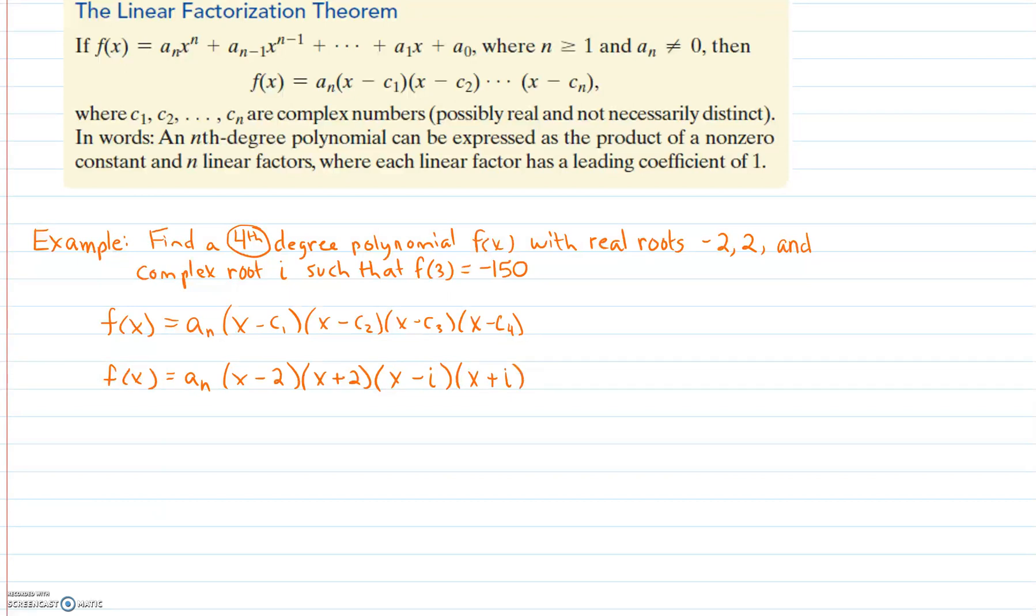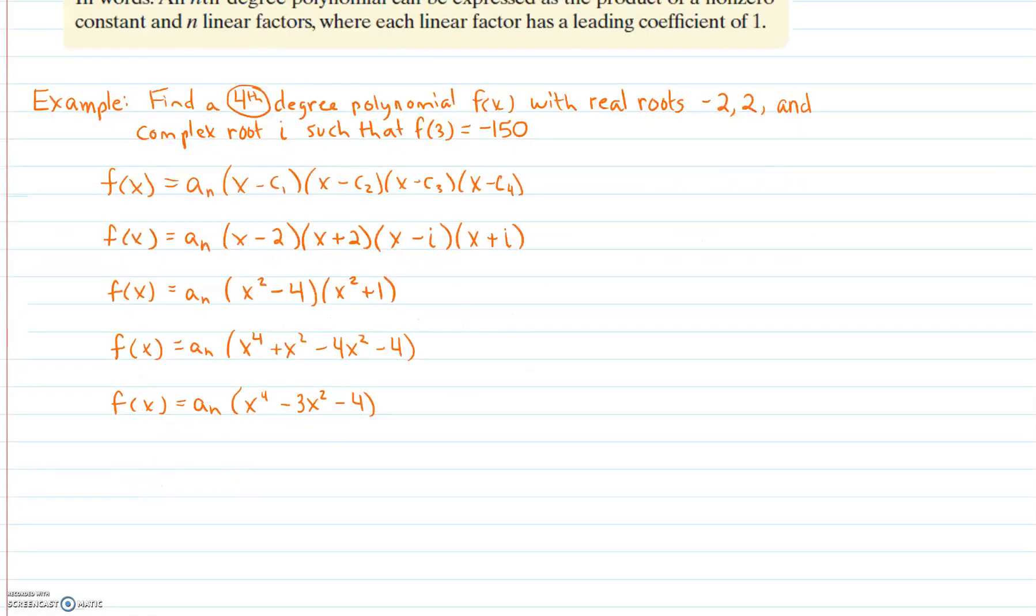We'll take these and distribute. Distributing yields us x squared minus 4 and x squared plus 1, and we just continue the process to solve. I've shown the distribution of two binomials here and then combine like terms to produce x to the fourth minus 3x squared minus 4.